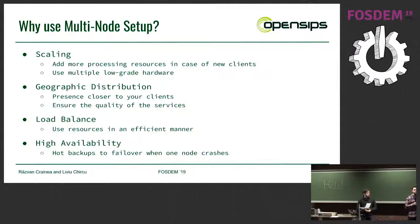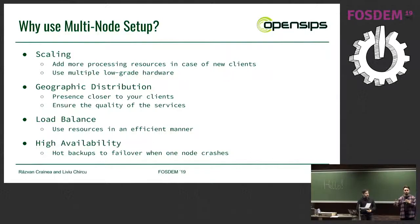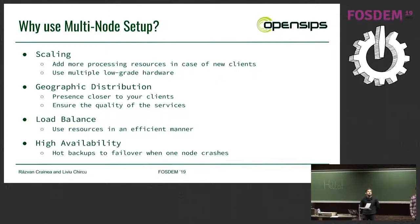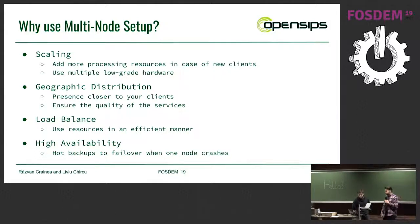Another reason is geographic distribution. Imagine you have customers in one part of Europe and customers in another part. You want to have nodes — physical nodes — as close as possible to those clients in order to offer a better experience. You also want to do load balancing dynamically depending on your business size, and probably all of you are interested in high availability to be able to failover in case a node crashes.